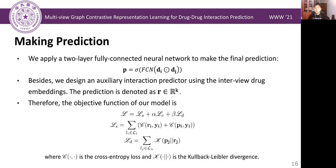So the objective function of our model is formulated as three parts, which are the supervised loss, the disagreement loss, and the contrastive loss.